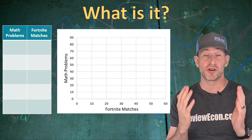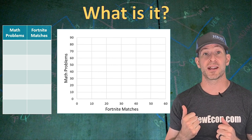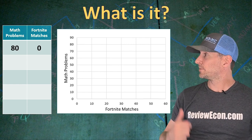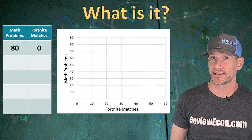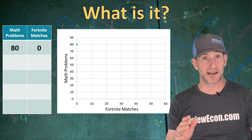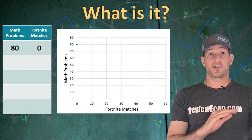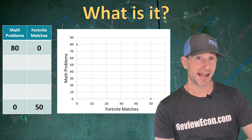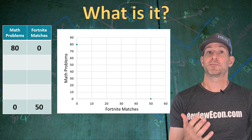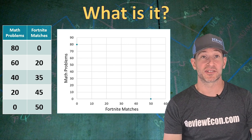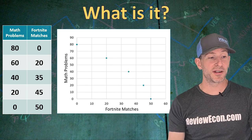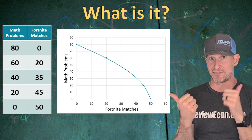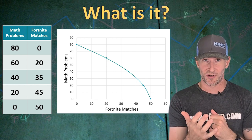Let's say when you get home from school today, you have two things you could do with your time: playing some Fortnite matches and doing some math problems for homework. If you spend no time playing Fortnite and only do your math homework, you could complete 80 math problems but play no matches of Fortnite. We put a point there indicating all math being done but zero Fortnite matches played. On the other extreme, you could do no math and play 50 matches of Fortnite. You could also play some Fortnite and do some math problems, giving us various combinations. If we connect those points together, it gives us a Production Possibilities Curve — all the combinations of Fortnite and math problems you could produce when you get home after school.